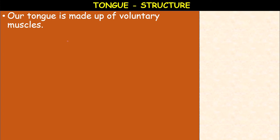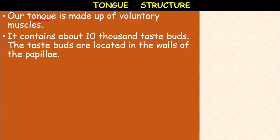Tongue structure: Our tongue is made up of voluntary muscles — it is a muscular structure. Voluntary muscles are the muscles which work on our will and wish; skeleton muscles are also called voluntary muscles. The tongue contains about 10,000 taste buds — small bud-like structures present on the tongue. The taste buds are located in the walls of papillae, the bulge-like structures present on the tongue.